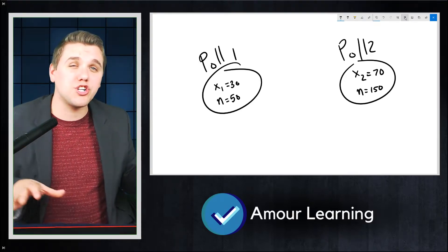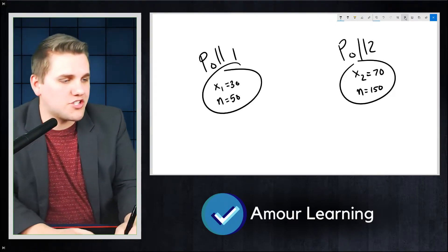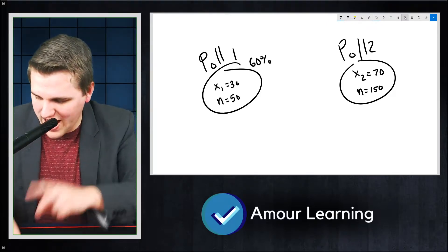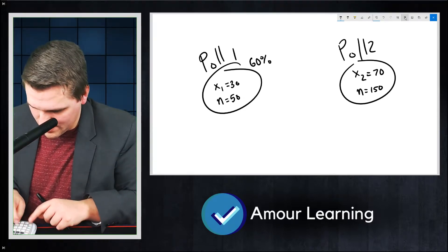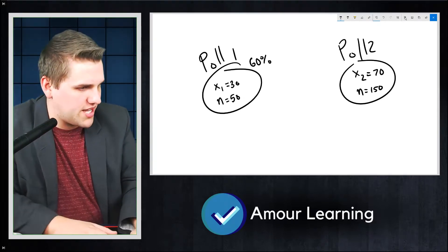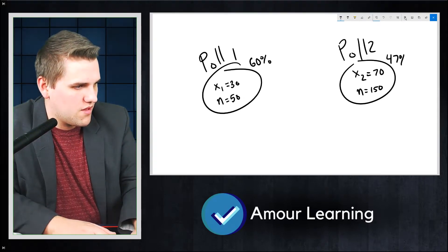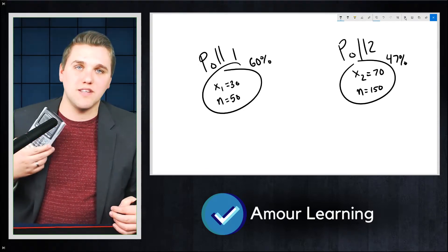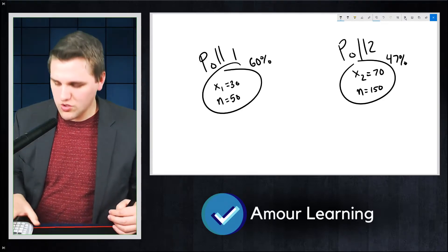So if you notice, the proportion is different from each group. In this group, about 60% are Republicans. But in this group, I can't do math, but I have a calculator. 70 divided by 150 is about 47%. Are those proportions different from each other? And that's what the two-sample Z-test for proportions are useful for.